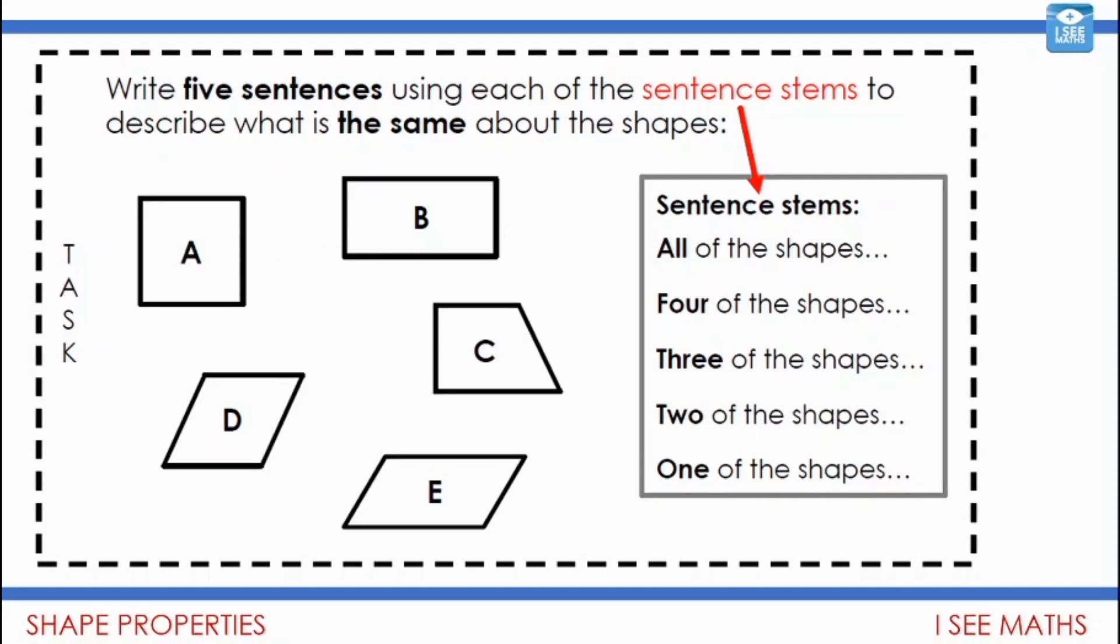We can think about the angles, the obtuse angles, the right angles, the acute angles that we have, and any sets of parallel lines. We might be thinking about symmetry. Be really creative. I wonder how many of those sentences you can complete thinking about what's the same about these shapes here? Now pause the video, have a go and then we'll look at some different possible solutions.